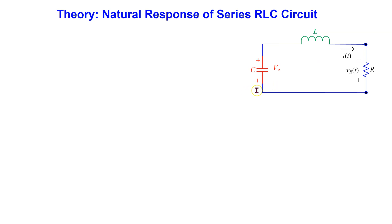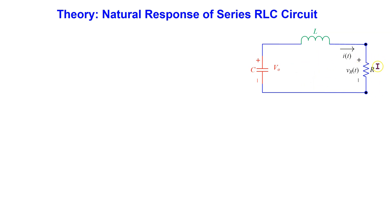The capacitor has an initial voltage. The circuit used to charge the capacitor is not shown here. When the capacitor is connected to this circuit, it begins to lose its stored energy, and eventually the voltage across the capacitor will go to zero. Recall that the capacitor and inductor are both energy storage elements. As the capacitor discharges, it is possible for the energy to bounce back and forth between the inductor and capacitor. In this circuit we are interested in the current, the voltage across the resistor R, the voltage across the capacitor, and how these variables approach their final zero values.